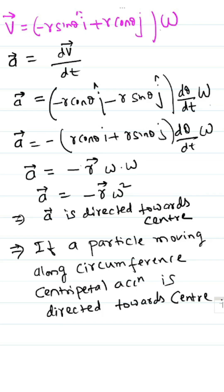From the above, it is clear that if a particle is moving along the circumference of a circle, then the centripetal acceleration is directed towards the center of the circle.